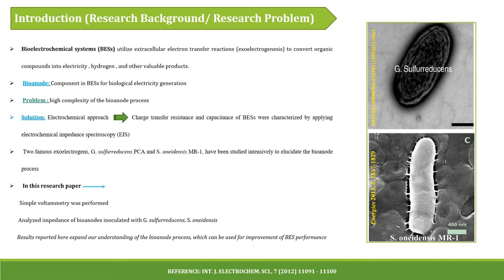The two famous exo-electrogens, G. sulfurreducens PCA and S. oneidensis MR1, have been studied intensively to elucidate the bioanode process. The microscopic images of G. sulfurreducens and S. oneidensis MR1 are shown in adjacent pictures. For a better understanding of their electrophysiology, cyclic voltammetry was performed on them. However, their impedance in bio-electrochemical systems has never been comparatively explored before.